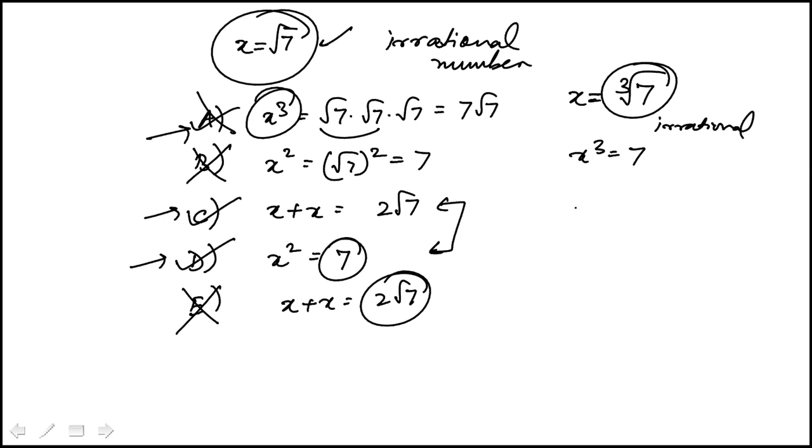And here, if I picked x to be fourth root of 7, then x square, looking at choice D, would become square root of 7, which is irrational. So that eliminates that. We're left with C. So that's one way to do it.